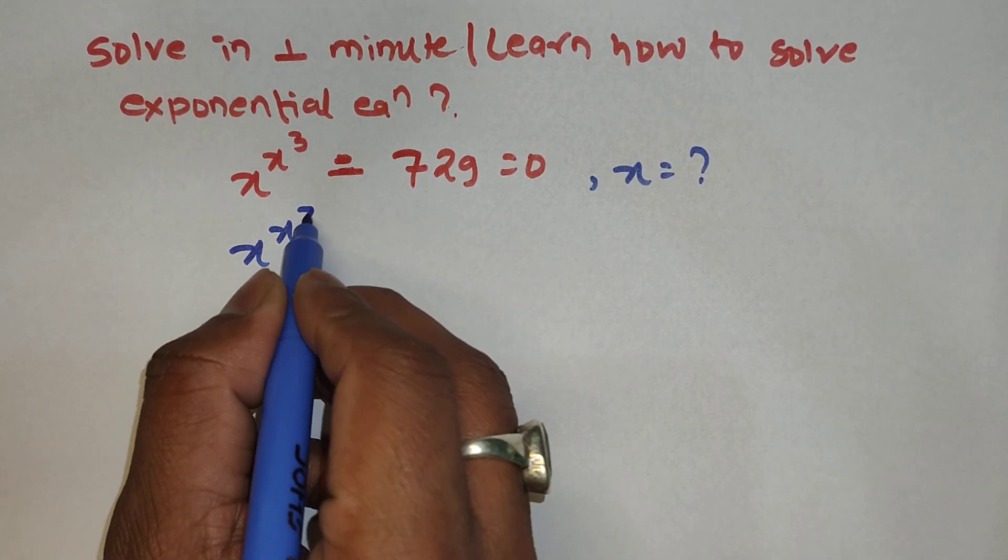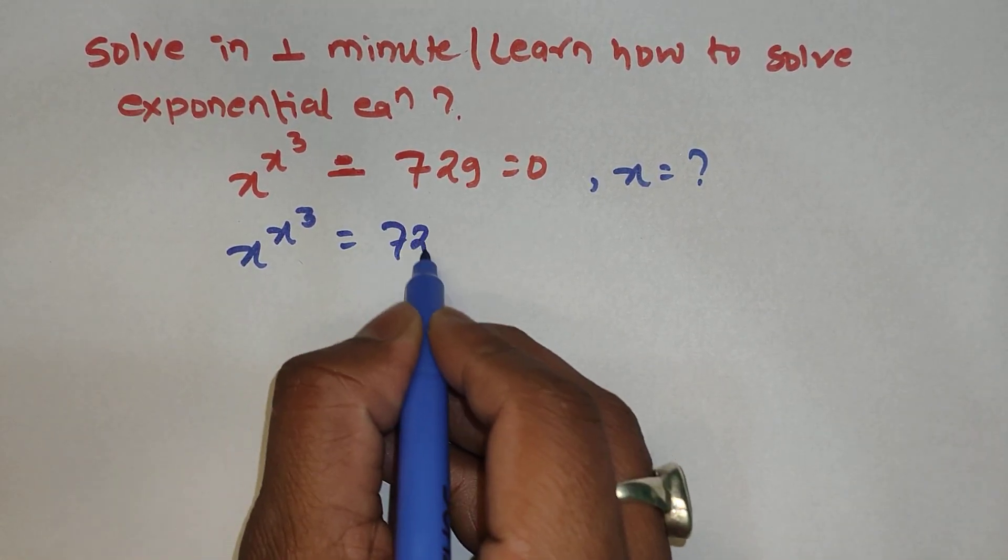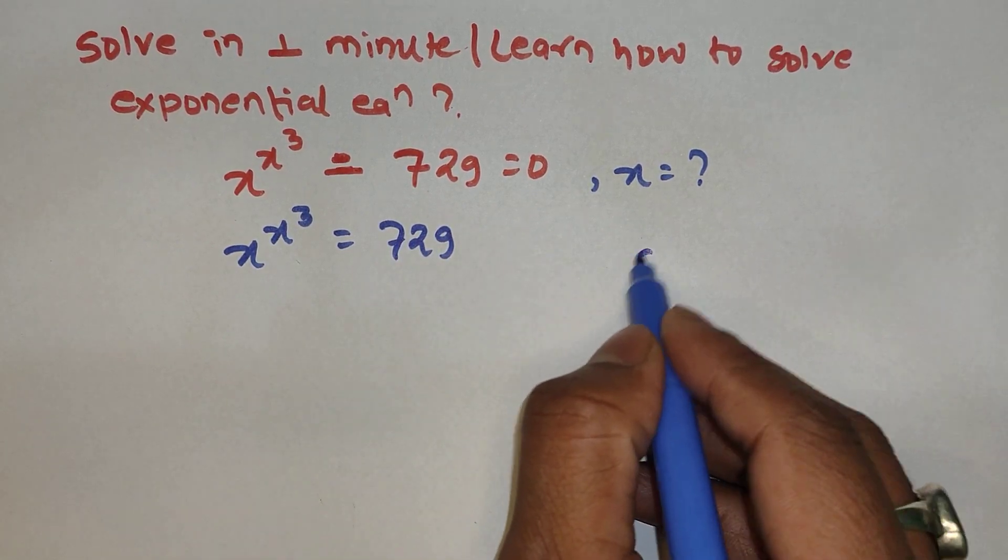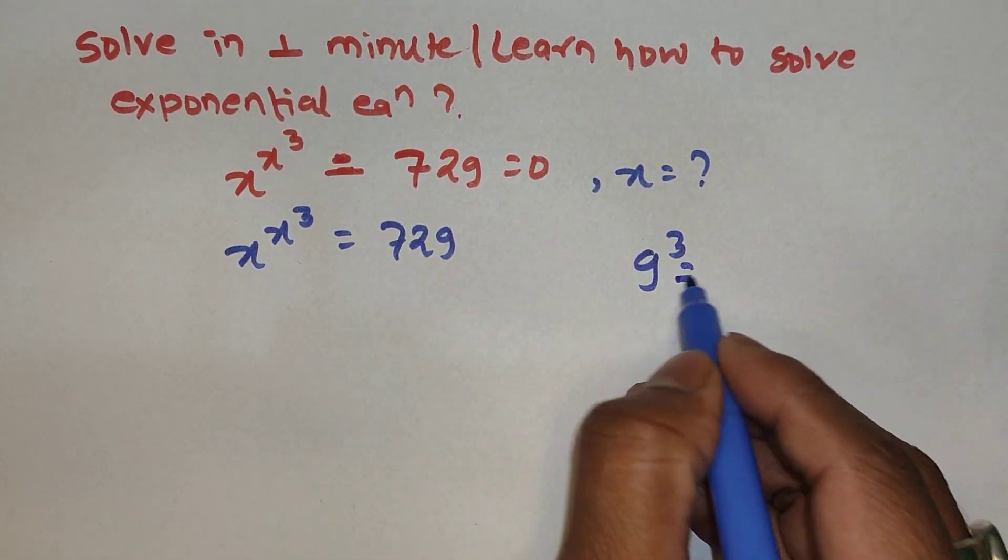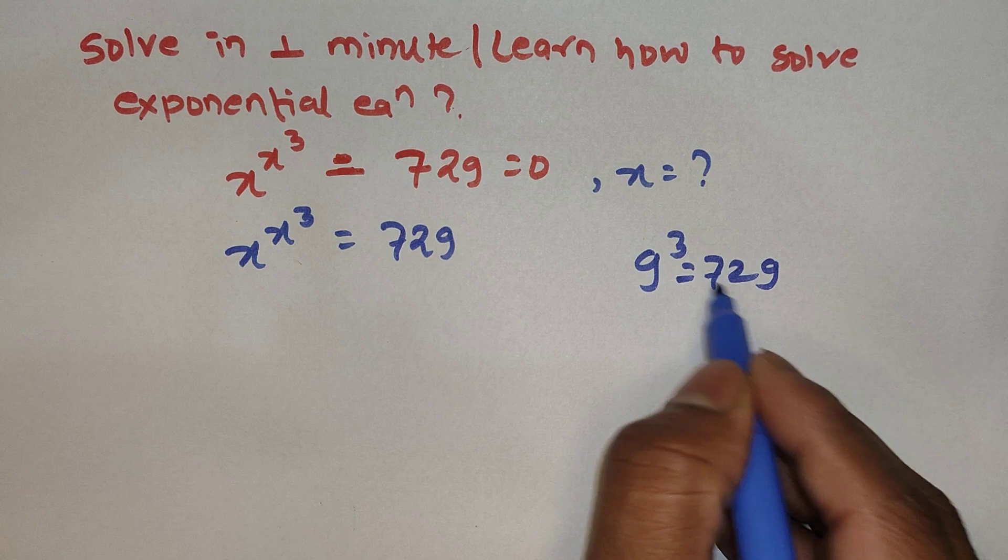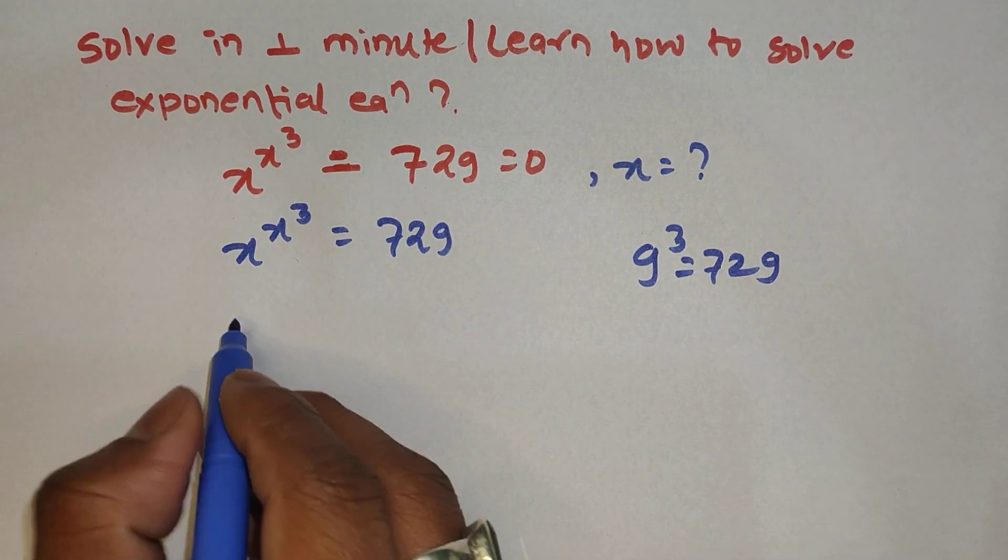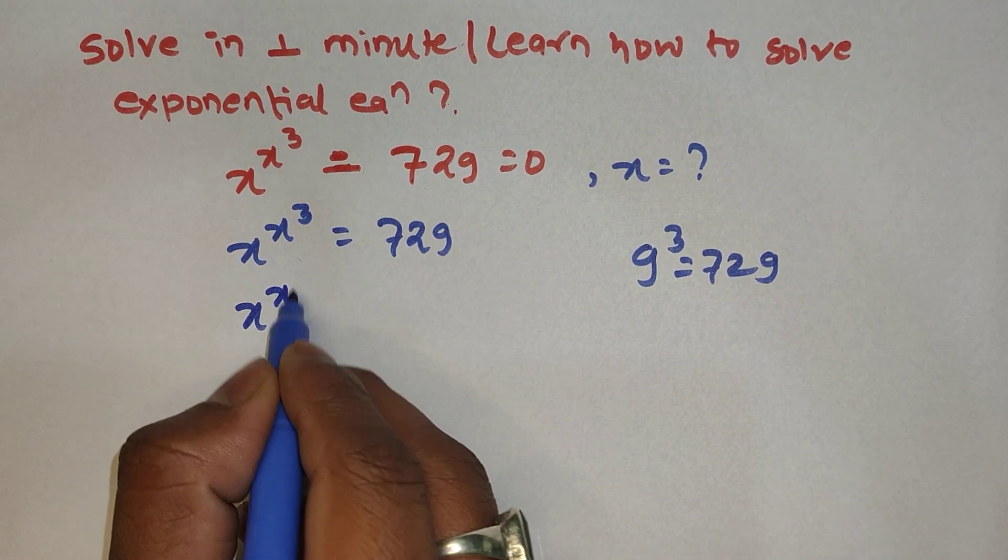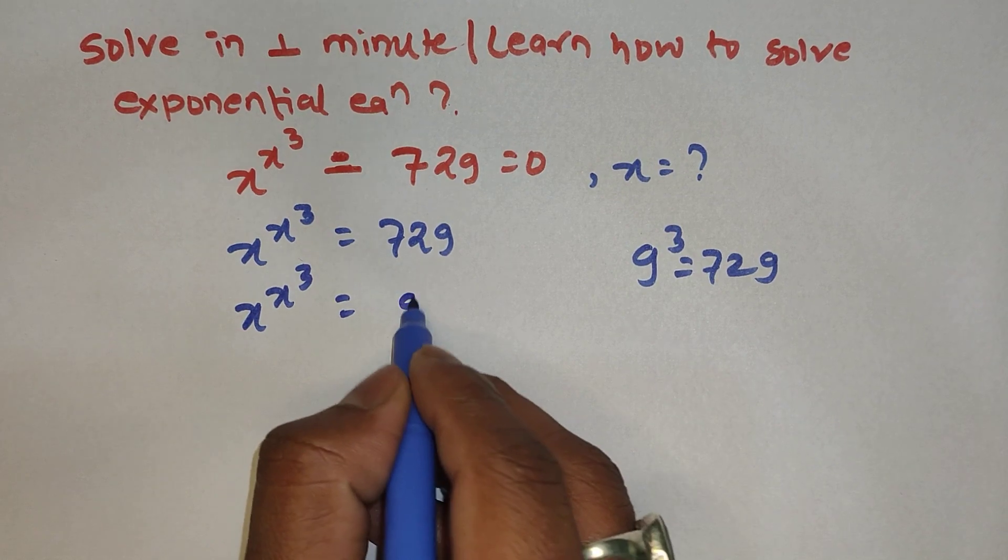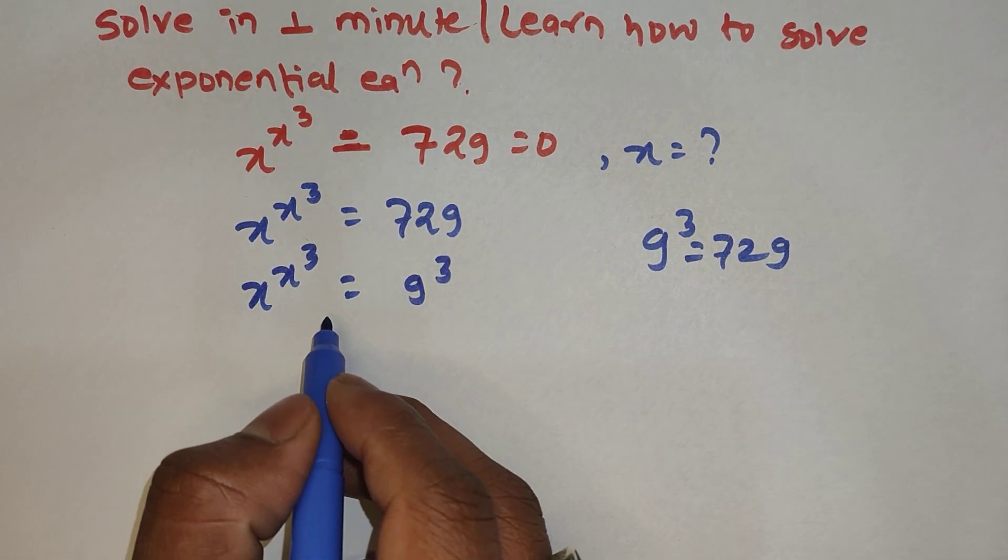It will become x to the power x to the power 3 equals 729. And as you know that 9 to the power 3 equals 729, so we are going to replace 729 by 9 to the power 3. So we can write here x to the power x to the power 3 equals 9 to the power 3.